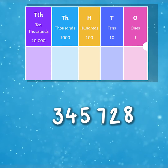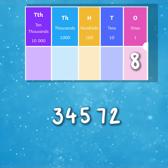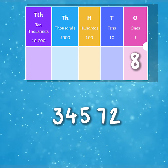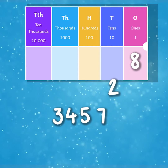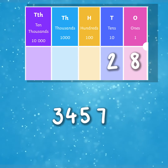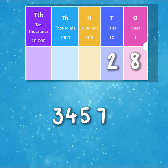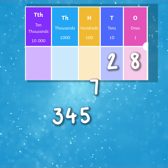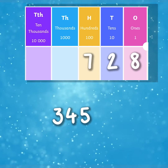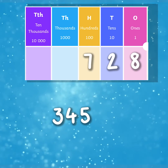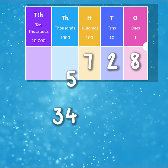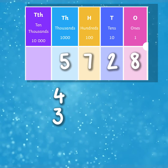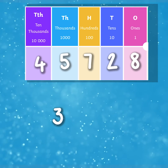There are eight ones in our digit as the eight is in the ones column. There are two tens as there is a two in the tens column. There is a seven in the hundreds column, which tells us there are seven hundreds, a five in the thousands column and a four in the ten thousands column.